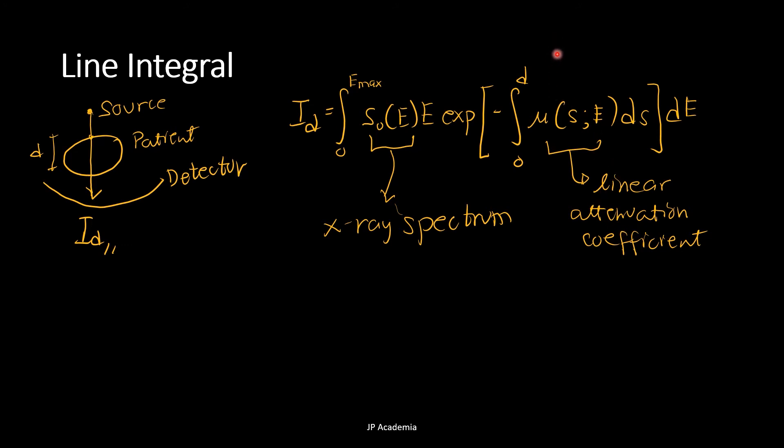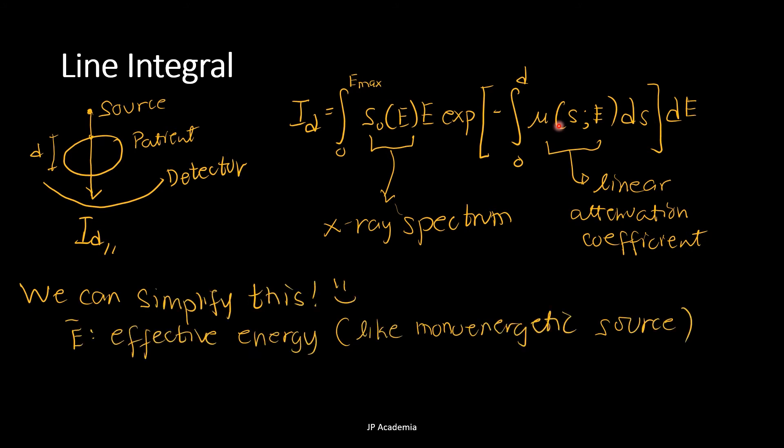We can simplify this by defining an effective energy instead of using an expression of the X-ray spectrum shown here. And this has the same measured intensity from a mono-energetic source E bar. So this is our variable. And in using the actual energy or poly-energetic source.